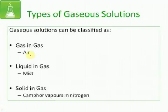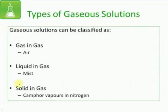The second type of gaseous solutions are the liquid-in-gas solutions, where liquid is the solute and the solvent is a gas. For example, mist, in which tiny droplets of water hang in the air. The third type of gaseous solutions are the solid-in-gas solutions, in which a solid solute is dissolved in a gaseous solvent. For example, camphor in nitrogen.